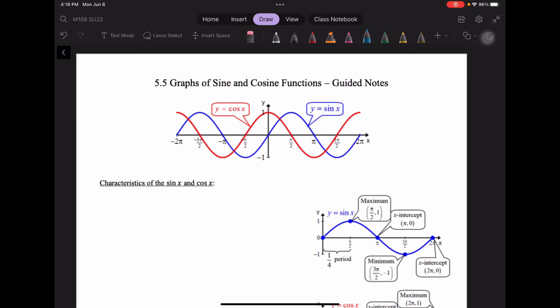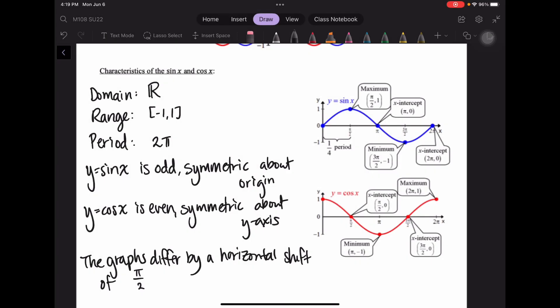So let's write down some characteristics of sine and cosine. To recap these characteristics that I've just written down, the domain for both y equals sine x and cosine x is all real numbers. The range is negative 1 to 1 inclusive. That's why I've written brackets. The graphs can achieve a value of negative 1 and 1. They both have a period of 2 pi. Y equals sine x is odd, which means it is symmetric about the origin. And y equals cosine x is even, meaning it is symmetric about the y-axis. And the graphs do differ by a horizontal shift of pi over 2.